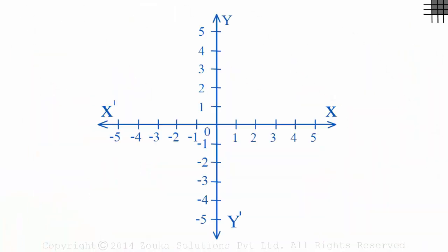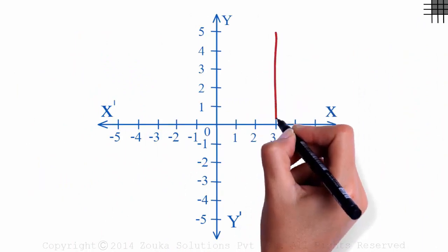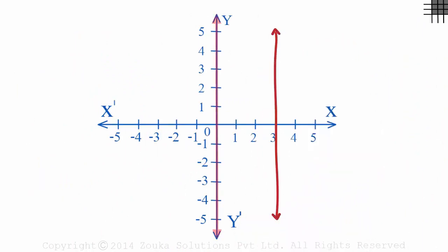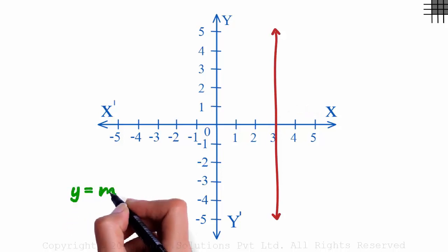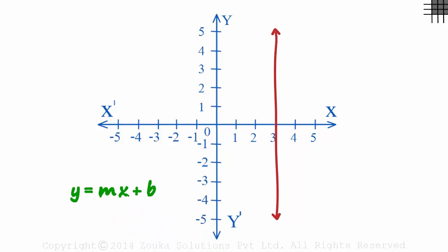On the coordinate plane, let's assume we have a line like this, parallel to Y axis and passes through three comma zero. The slope intercept form is Y is equal to MX plus B. What is the slope and the Y intercept of this line? As the run is zero, the slope of this line is undefined. And as it does not intersect the Y axis anywhere, it does not have a Y intercept. The equation of the line is X is equal to three.